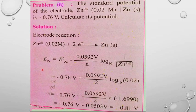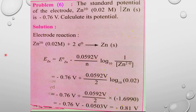To summarize problem 6: the electrode potential of zinc equals the standard electrode potential of zinc minus (0.0592 / n) × log(products / reactants). Putting in the values gives the answer: −0.81 V. Next is the last example — problem number seven.